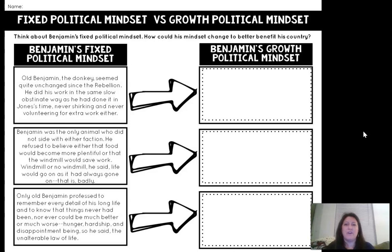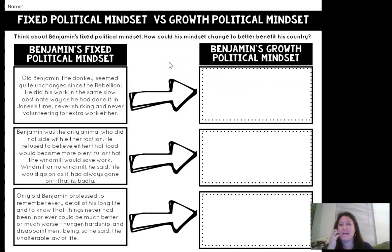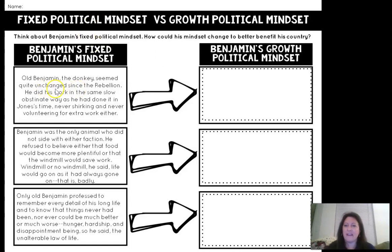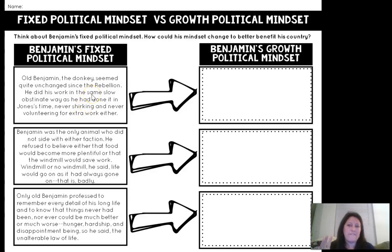Now we're going to take Benjamin's fixed political mindset and change it to a growth mindset. How can we change his mind? Old Benjamin the donkey seemed quite unchanged since the rebellion — he did his work in the same slow, obstinate way as he had done in Jones's time, never shirking and never volunteering for extra work either. That's direct characterization ('unchanged,' 'obstinate'), and 'never volunteering for extra work' is indirect characterization. What would his thought pattern look like if Benjamin achieved a growth mindset? What would the author be saying about him?